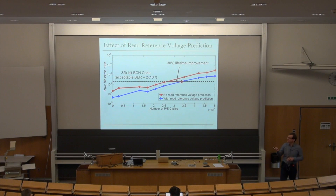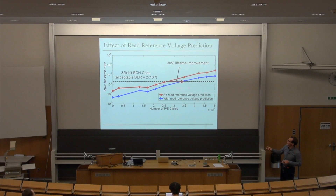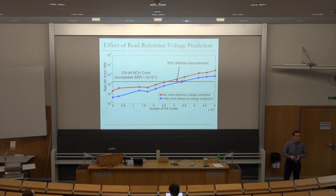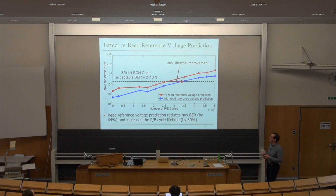Another way to use this: you can keep a constant lifetime and do read reference voltage prediction, then have much less ECC in the system — ECC satisfying a bit error rate smaller than 2×10⁻³, say 1×10⁻³, would be much less complex. So you could reduce the amount of ECC by keeping the lifetime constant, as opposed to increasing the lifetime while keeping the ECC constant.